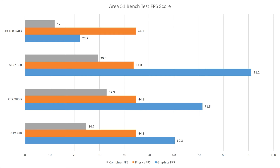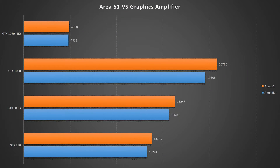Once we had those two graphs, we combined them into the Area 51 versus Graphics Amplifier graph — literally just the graphical scores achieved between the 980, the Ti, the 1080, and the 1080 in 4K Ultra. I didn't do the 980Ti 4K on the Amplifier, and I didn't do the 1080 Ultra on the Amplifier, so I've only combined results where both rigs actually have comparative data.